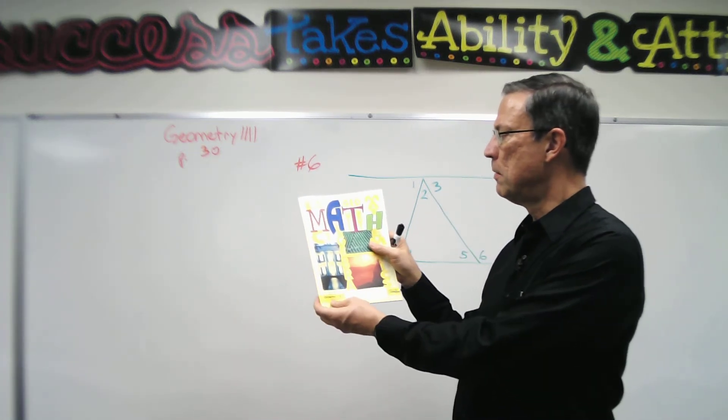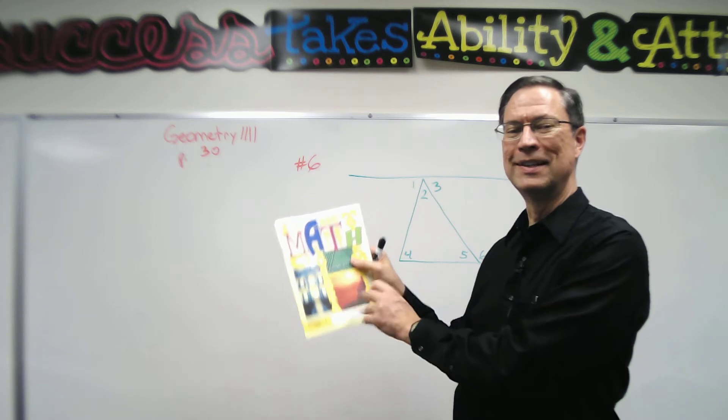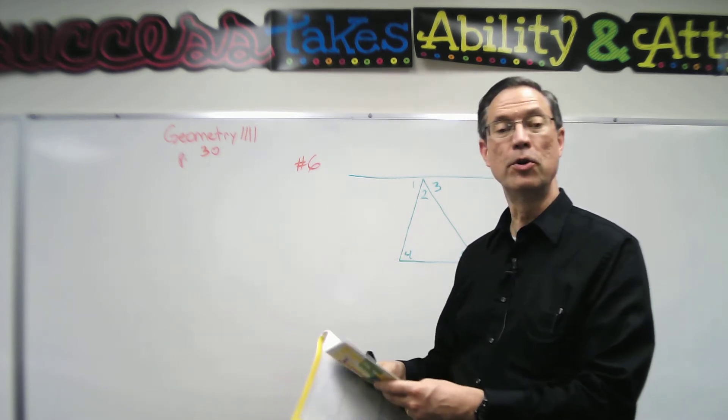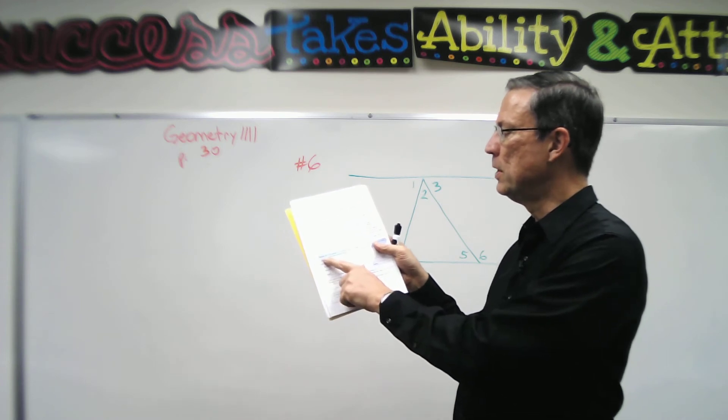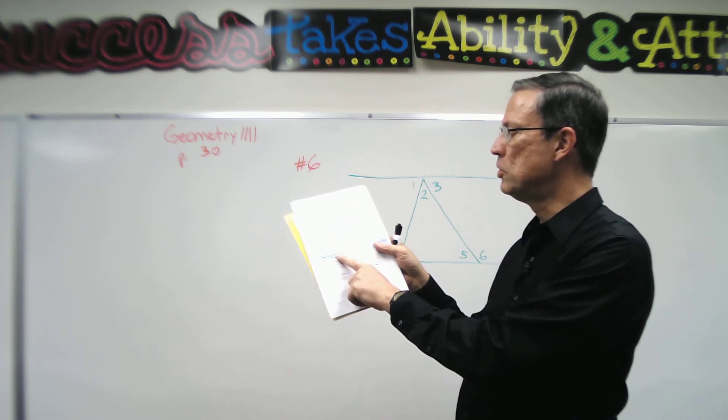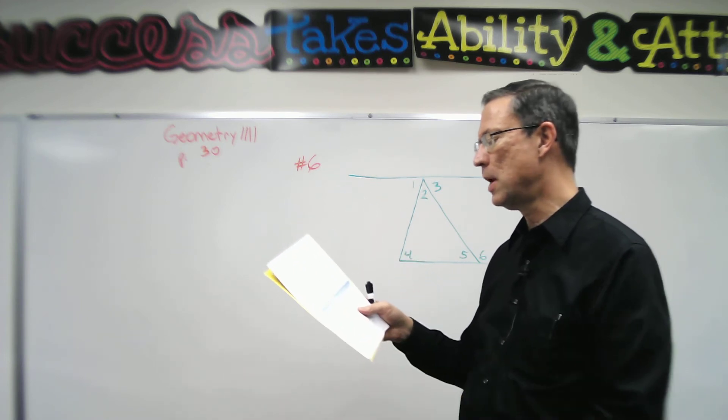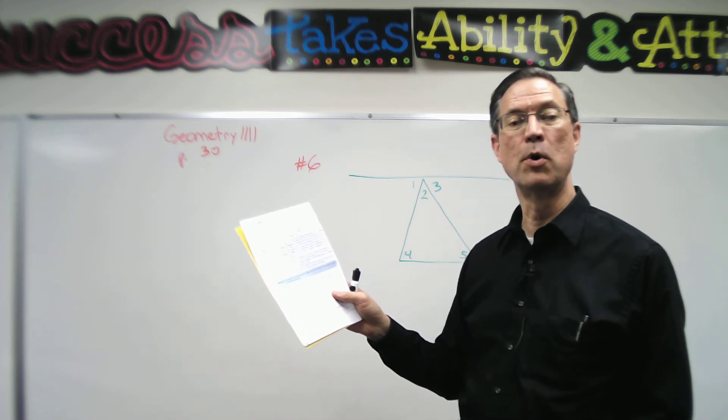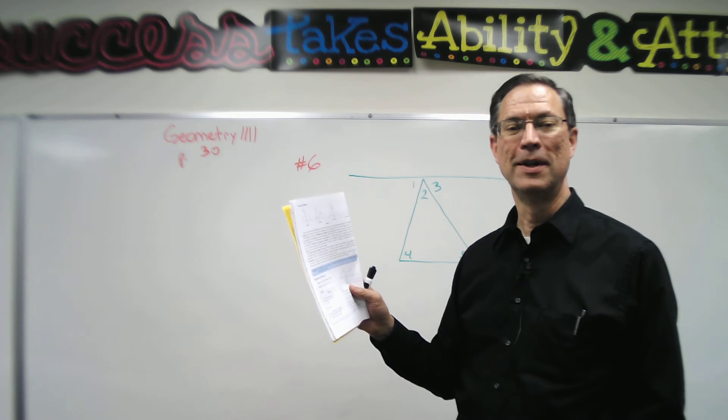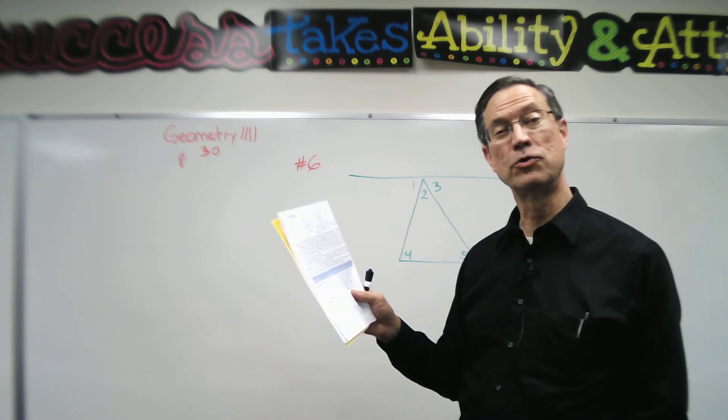All right, one more video here from Geometry 1111. I want to look at page 30. We just talked about the postulate 20 or theorem 20: the measure of an exterior angle of a triangle is equal to the sum of the measures of the two remote angles.